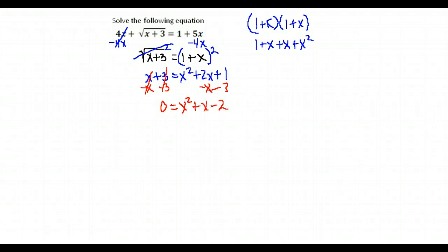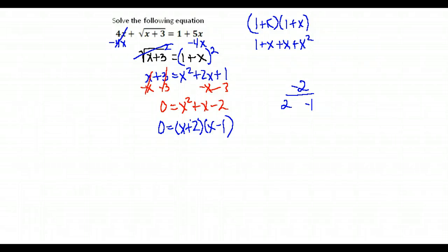I'm hoping this factors so I don't have to use the quadratic formula. Are there factors of negative 2 that add to equal the middle term 1x? Factors of 2 are 2 and 1. If I have a positive 2 and a negative 1, those would multiply to be negative 2 and add to be positive 1 in the middle. So my factors are x plus 2 and x minus 1. Next step: set each one equal to 0 and solve it. So now I have x equals negative 2, and x equals positive 1.